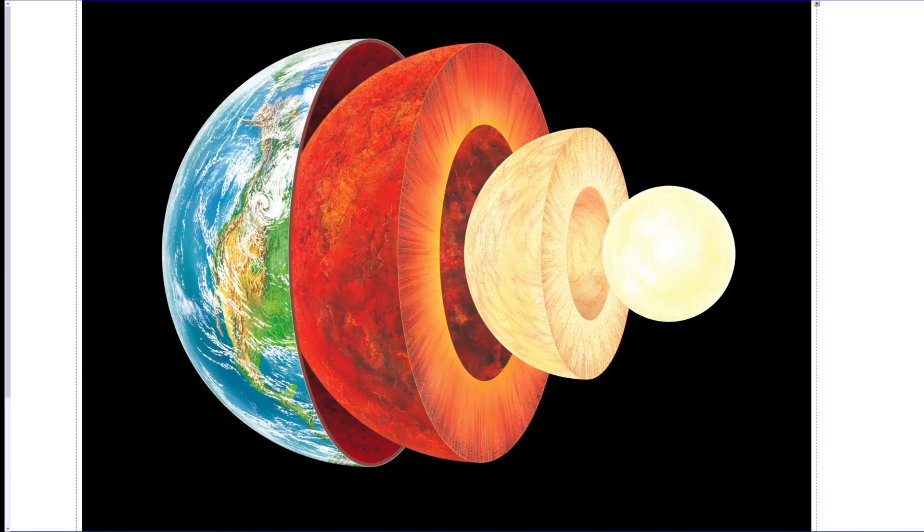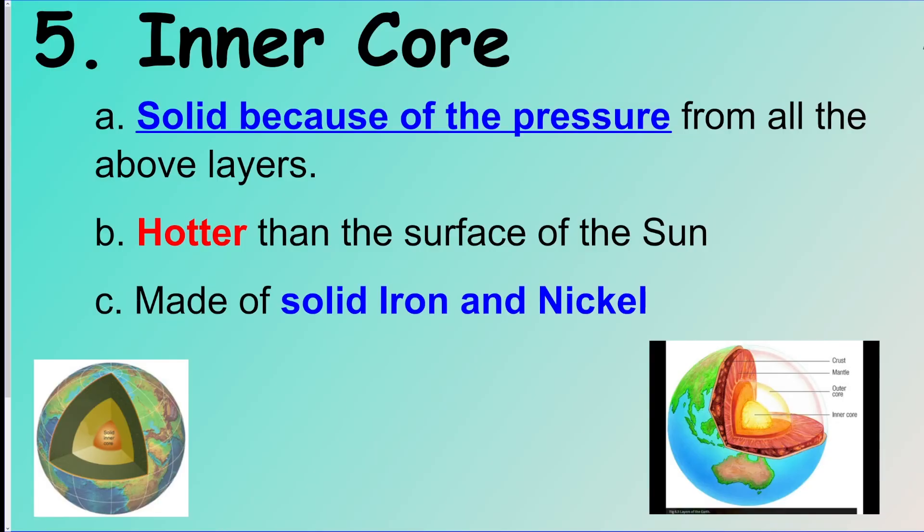This is what they look like if you were to pull them out of each other. We got the crust here. We got the mantle, and then the outer core, and the inner core, which we're going to do last. The inner core is solid. Even though it's so hot down there, the weight of the whole planet is pressing on this inner core. It's like the pit of the earth. So it ends up solidifying, and it's also made of iron and nickel.